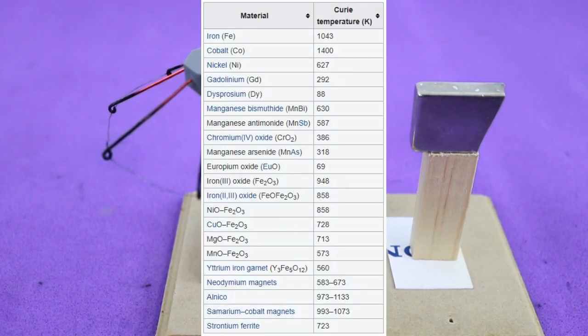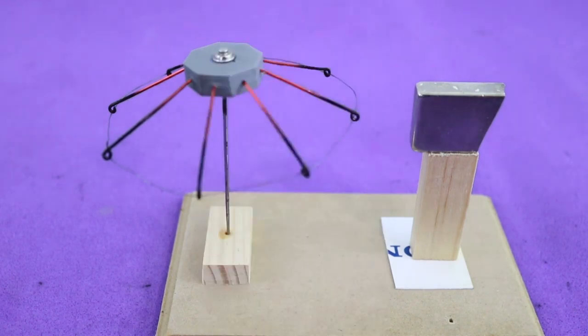In this table, you can see the Curie temperatures of different materials. For this experiment, we need a material whose Curie temperature is low enough so that we can reach it with a flame. That is the reason we use the nickel alloy.